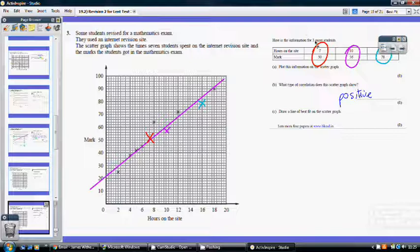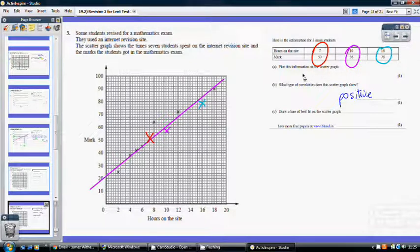Question three. So here is information for three more students. So make sure you've gone and plotted those three points. My red one, my purple one, my blue one. What type of information does this scattergraph show? What type of correlation? It's positive correlation. And then draw a line of best fit. So nice and easy.